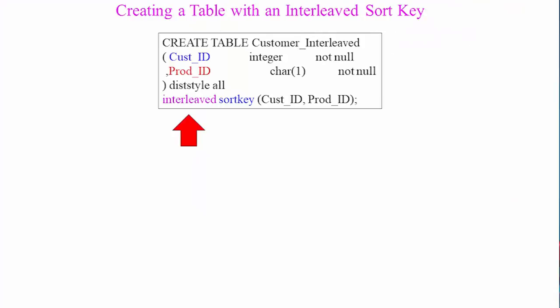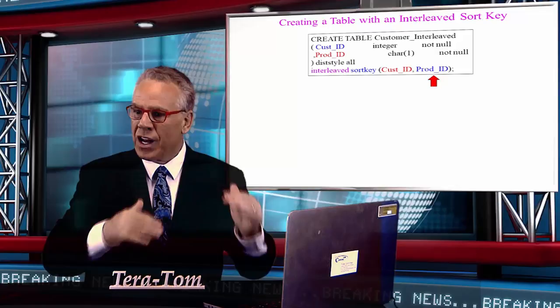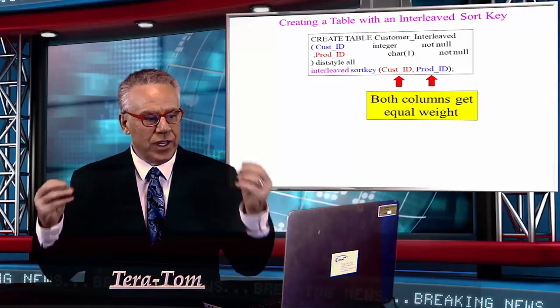In a normal order by statement, cust ID is the major sort. And then on any ties, there's a minor sort on prod ID. This isn't the case here. This is a case where you're going to have both the cust ID and the prod ID moved as close together in the blocks as possible.